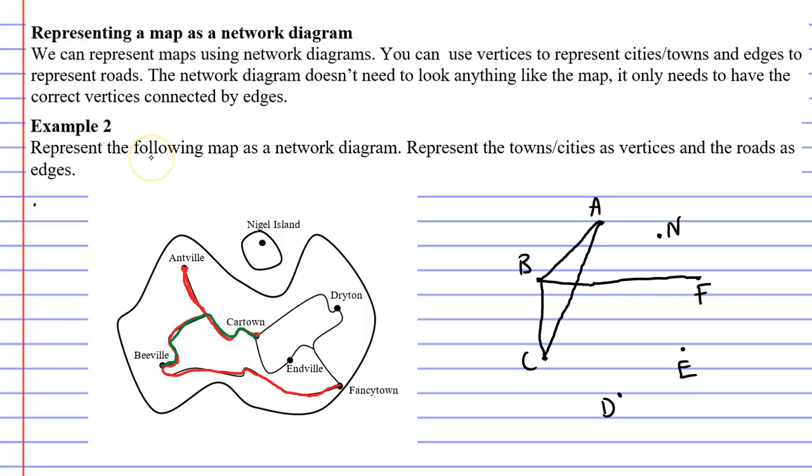All right, let's now focus on car town. What is car town connected to? We already mentioned that it's connected to Antville and Bville. But we can also see that it's connected to Dryton and Antville. So car town connects to Dryton and Antville.